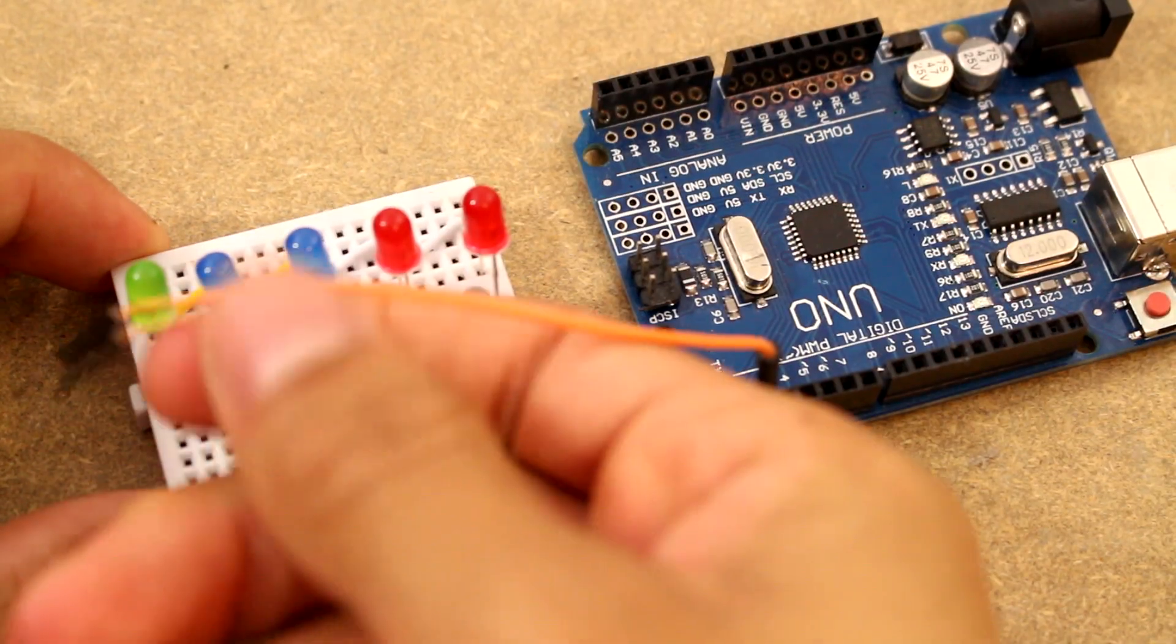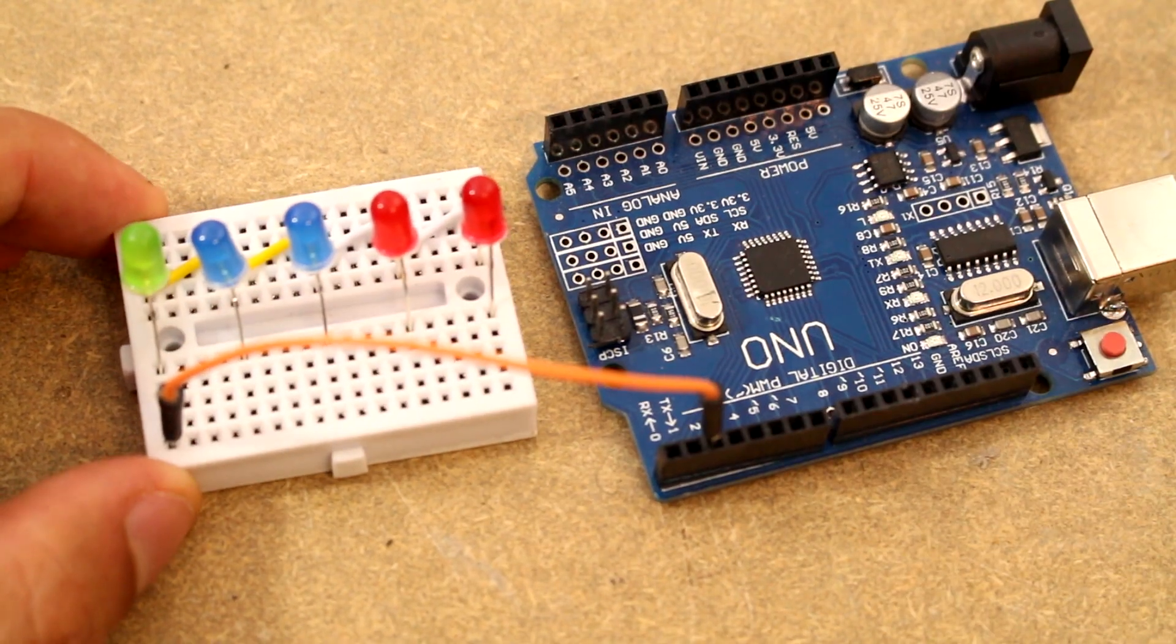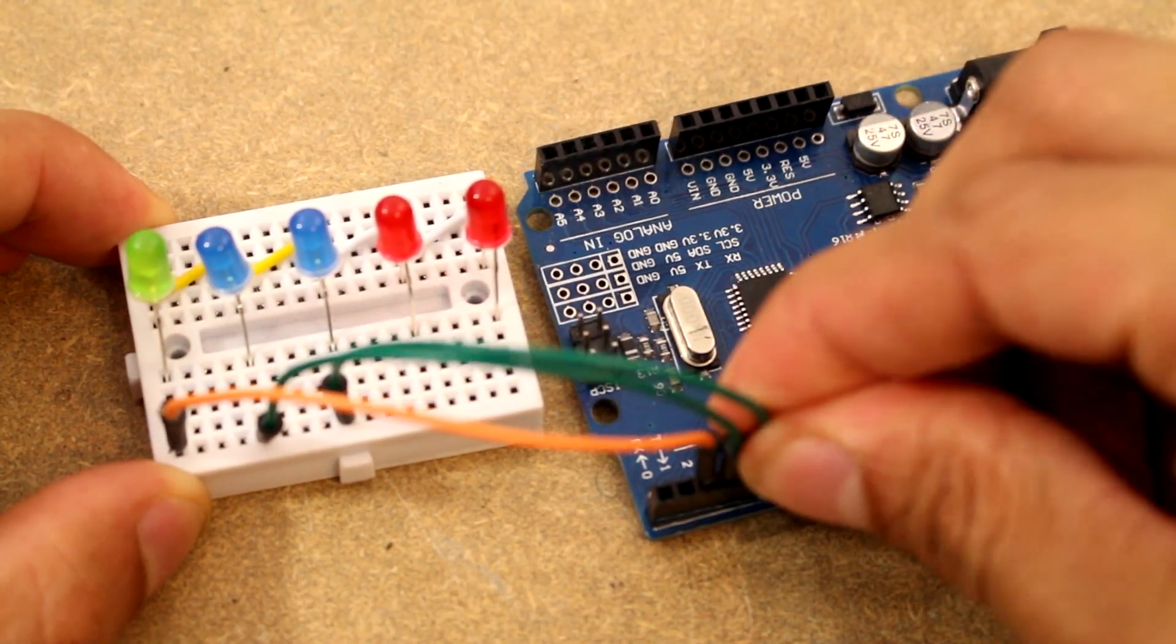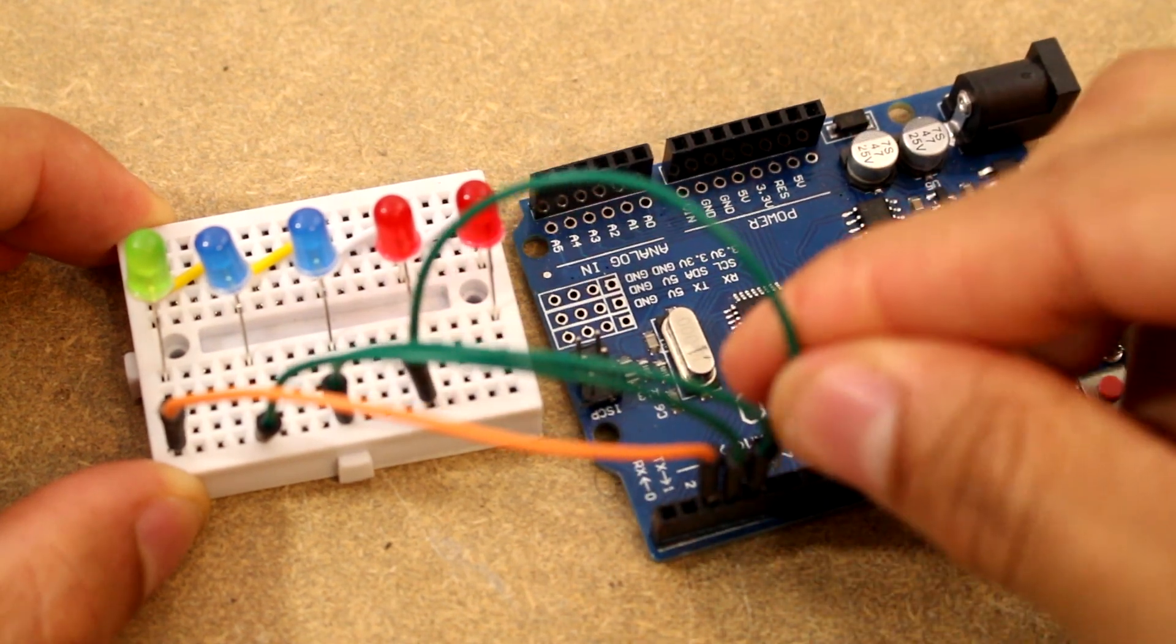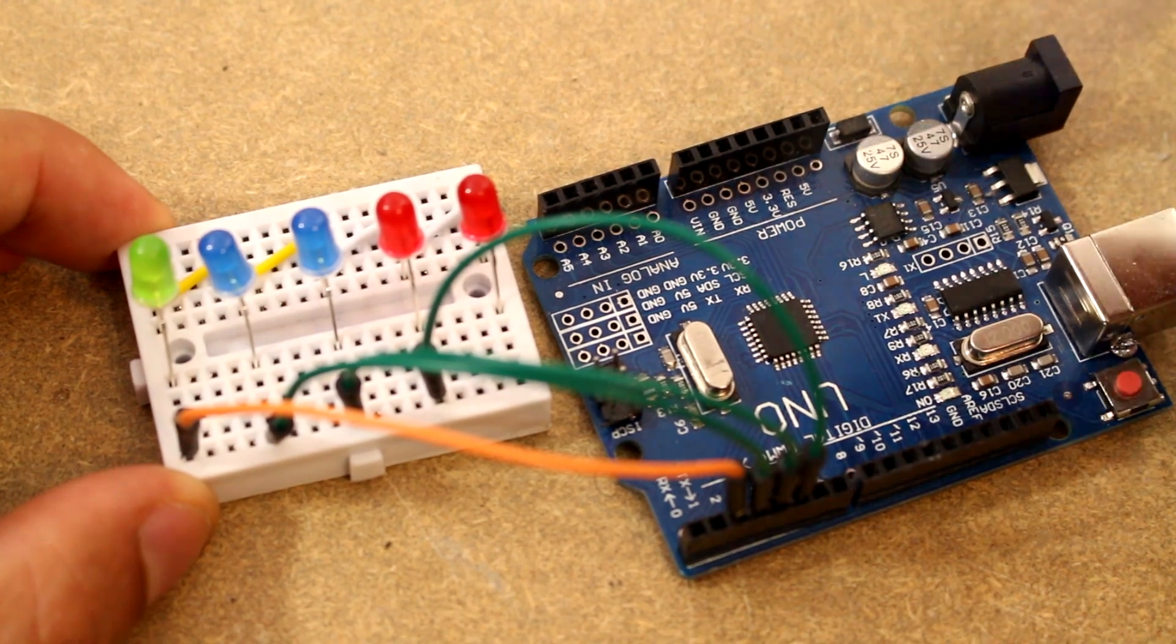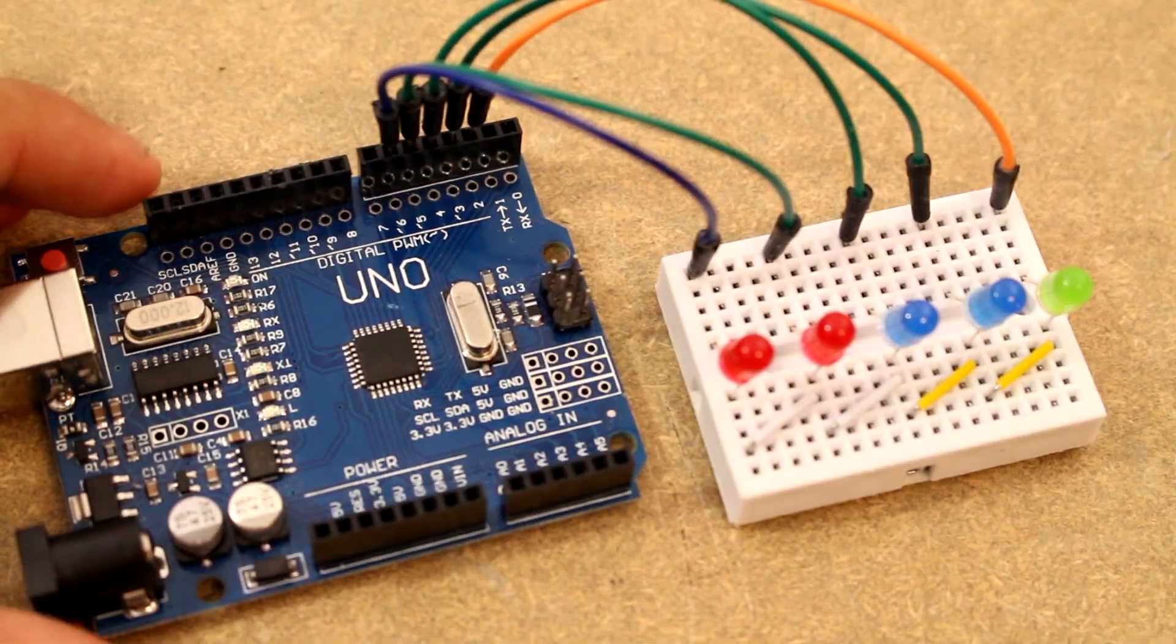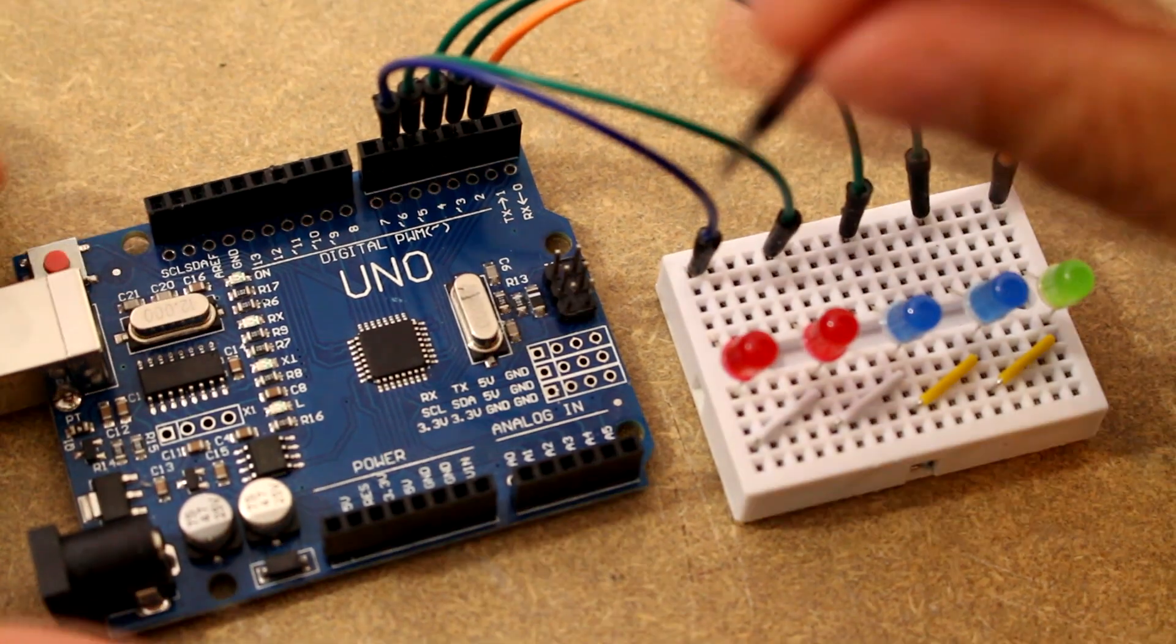So now I'm going to connect the inputs of my Arduino to each of the LEDs, so that each input will control each LED. And then after that we can go ahead and connect the ground, just one ground wire to the ground side of the LEDs.